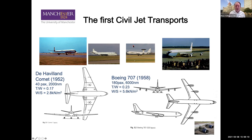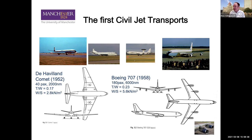The other configuration — engines at the back of the fuselage — was introduced by the Sud Aviation Caravelle. It was the first aircraft to put the engines at the back of the fuselage; it was a twin-engine jet. After that came the VC10, BAC 111, Hawker Siddeley Trident, 727, DC-9, and the like. Interestingly, Douglas came up with their concept at the same time as Boeing, though they were a little behind.